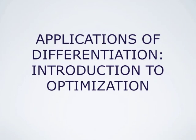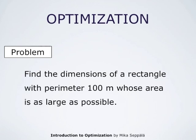Hello everybody, this is Mika Seppelä. In this video I discuss applications of differentiation to optimization. This is an introduction to optimization. By optimization I mean solving problems of the following type: find the dimensions of a rectangle with perimeter 100 meters whose area is as large as possible. We have to optimize certain quantities that depend on other quantities which satisfy certain conditions.